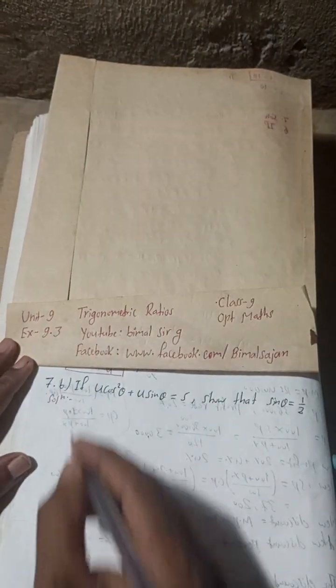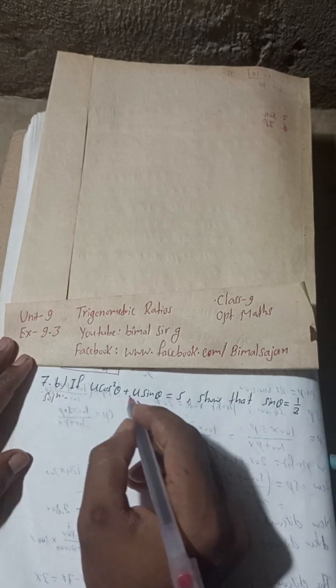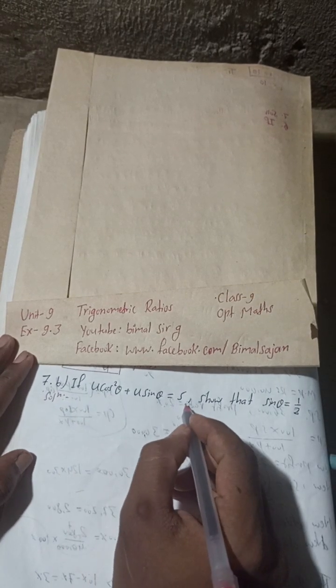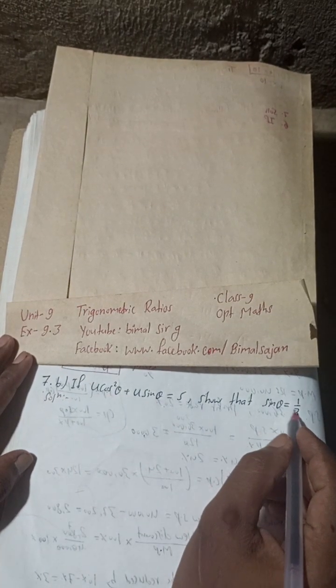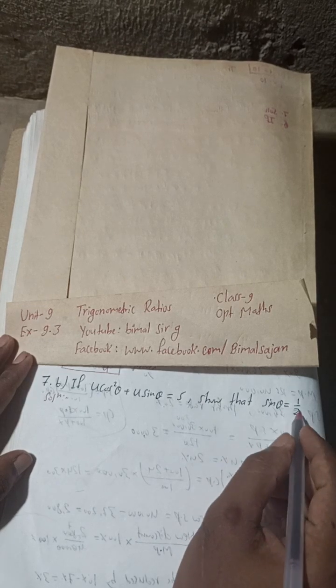Now 7B: If 4cos²θ + 4sinθ = 5, show that sinθ = 1/2. We have to show sinθ = 1/2.